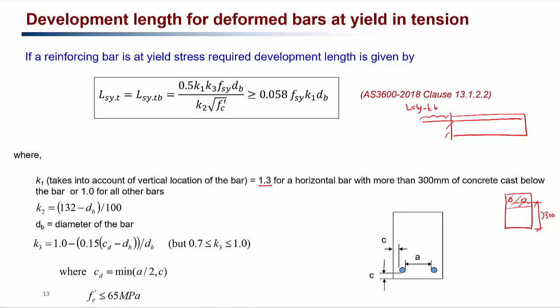k2 accounts for the diameter effect of the bar. k3 accounts for the spacing of the bars and the distance of the bar from the side and base of the beam. k3 is calculated using cd, which is the minimum of half the clear spacing between bars (a/2) or c, the clear cover from the bottom or side. The ratio cd/db is used in the k3 equation, and k3 must be between 0.7 and 1.0. Plugging in k3 gives the development length needed for the tension reinforcement at yielding.